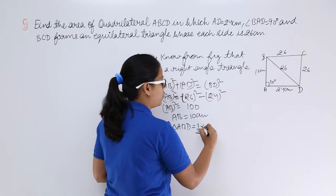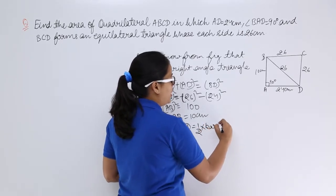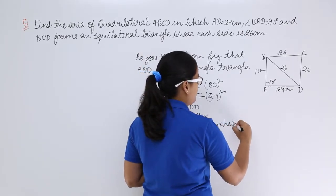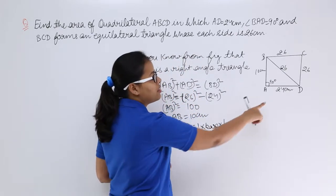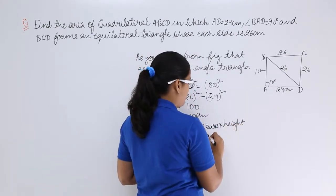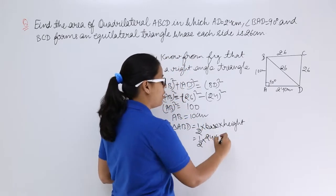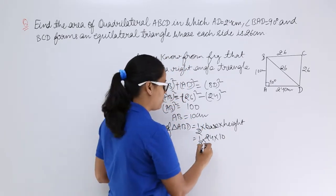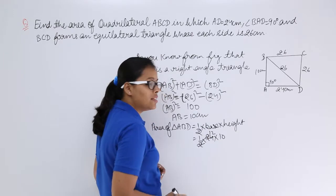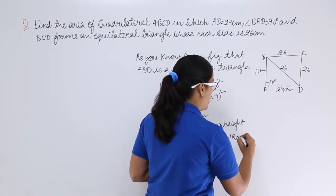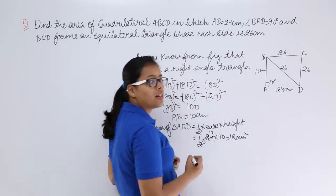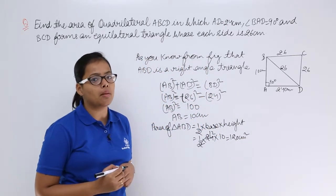So this is equal to half into base into height. You know the value for base. Base here is 24. Height we already found out which is 10. This one cancellation will give you 12. 12 into 10 is 120. So area for the right angle triangle is coming out to be 120 centimeter square.